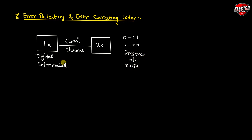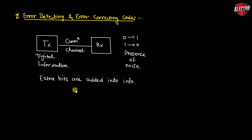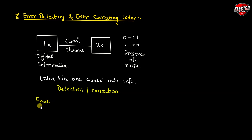To maintain the data integrity between transmitter and receiver, extra bits or more than one extra bit are added to the data. These extra bits allow the detection and sometimes correction of errors. The data along with extra bits forms the code — that means the final code equals message bits plus extra bits.